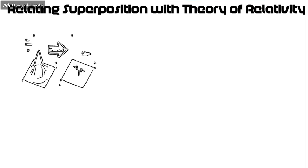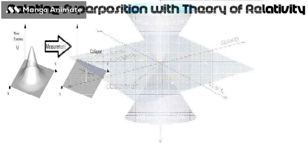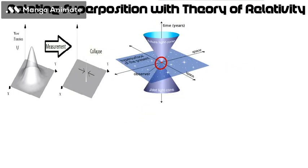If we relate the superposition phenomena with the theory of relativity, we can conclude that any kind of observation of space-time collapses the superposition of the space-time into one reality. Also, the superposition is collapsed for the observer to perceive reality, but behind the scenes, space-time is always in superposition.